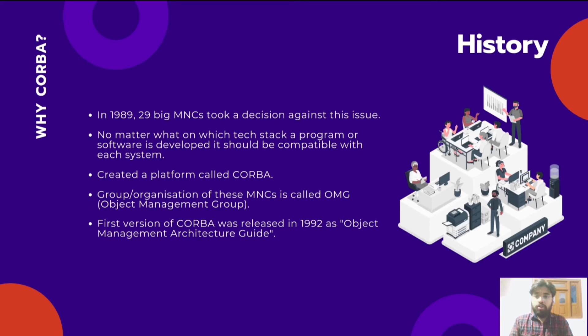One more interesting thing to note is that the first version of CORBA was released in 1992 as Object Management Architecture Guide, and further it was renamed to Common Object Request Broker Architecture.